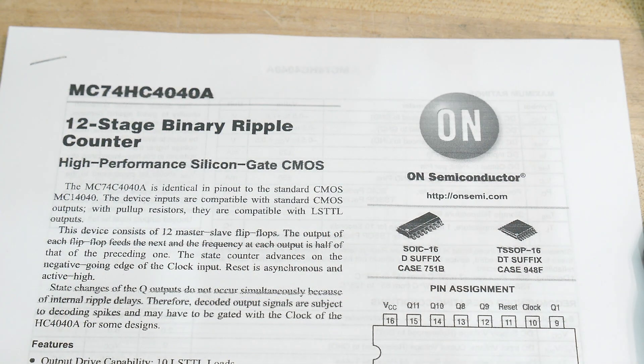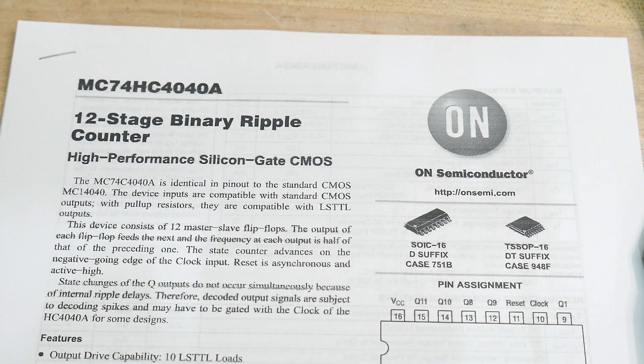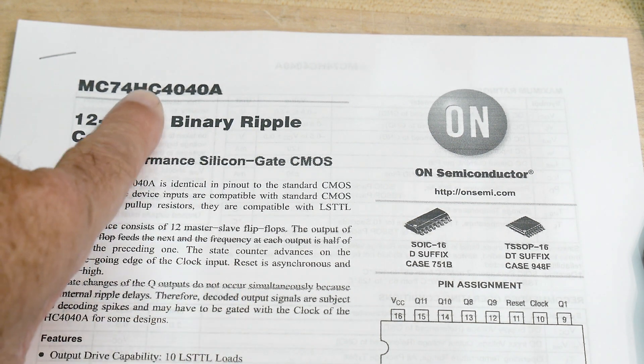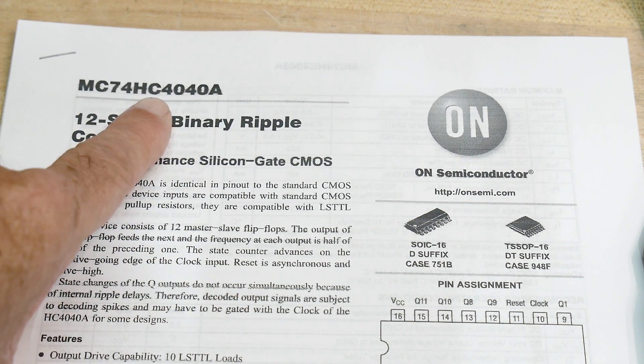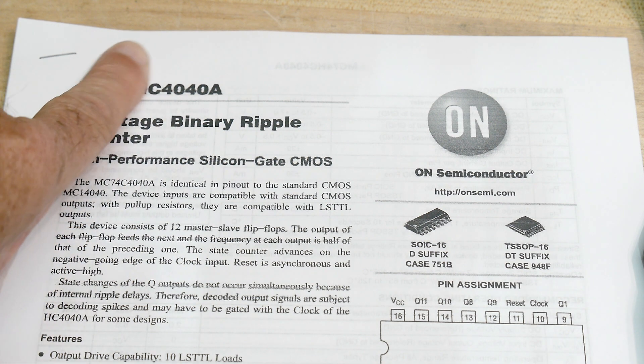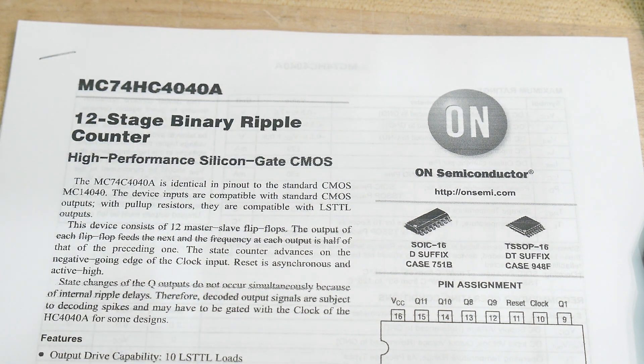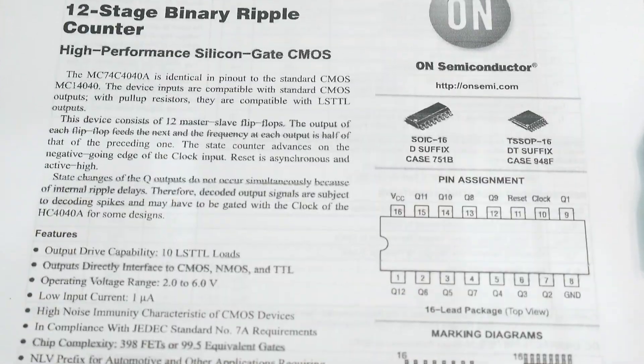I asked my viewers if they had any favorite ICs, jelly bean ICs that should be a video. I've chosen this one - this is one of my favorites, the 4040. You can get it as regular 4040 or 74HC4040. It's a 12-stage ripple binary counter, just a 12-bit counter.